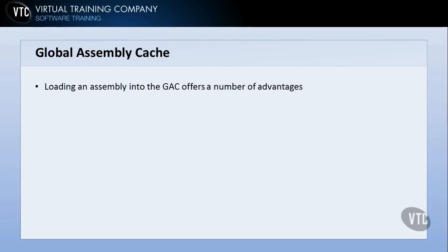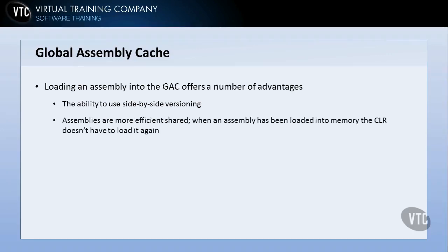Loading an assembly into the GAC offers a number of advantages. First of all, the ability to use side-by-side versioning — we can have multiple assemblies with the same name but different version numbers, and different applications can access the version they need, avoiding a lot of problems. Assemblies are also more efficient when shared. When an assembly has been loaded into memory, the Common Language Runtime, or CLR, doesn't have to load it again — it can see it in memory and utilize it.